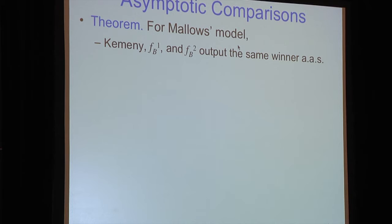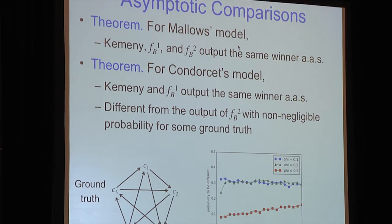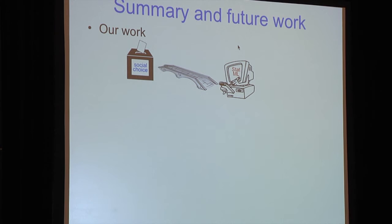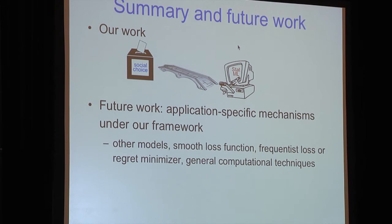We also performed asymptotic comparisons. For Mallow's model, all three mechanisms agree almost surely as the number of agents goes to infinity, so the choice matters less with large data. For the Condorcet model, there are surprising results: for some ground truths, the mechanisms differ with non-negligible probability, and simulations confirm this. Our approach builds a new bridge between social choice, machine learning, and statistics, offering a new paradigm — we invite the community to apply their techniques to social choice problems.